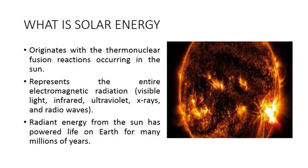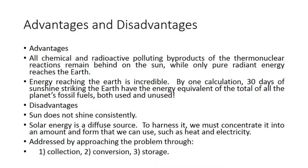Radiant energy from the sun has powered life on Earth for many millions of years. Advantages of solar energy: all chemical and radioactive polluting byproducts of the thermonuclear reactions remain behind on the sun, while only pure radiant energy reaches the Earth. The energy reaching the Earth is incredible — by one calculation, 30 days of sunshine striking the Earth have the energy equivalent of the total of all the planet's fossil fuels, both used and unused.